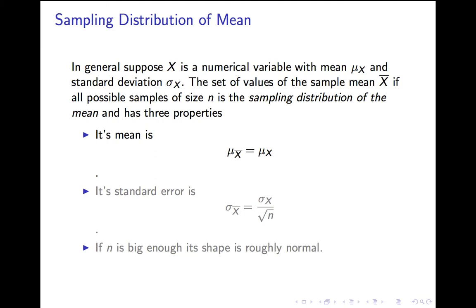The mean of x-bar, as we said before, is the same as the mean of X. Expect, on average, that sample mean to be the population mean. The standard deviation, remember we call that standard error when we're talking about a sampling distribution. The standard deviation of x-bar is the standard deviation of X divided by the square root of the sample size. So it's going to be smaller than the standard deviation and get smaller the bigger n is. And then the third fact is, it's roughly normal, as long as n is big enough.